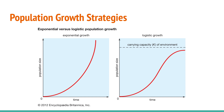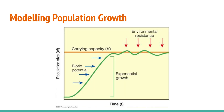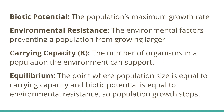Today we're talking about population growth strategies and we're going to be looking at a lot of graphs. These are the two most common that we'll see: exponential growth and logistic growth. When talking about population growth we need to understand a couple of different factors: biotic potential, carrying capacity, and environmental resistance.